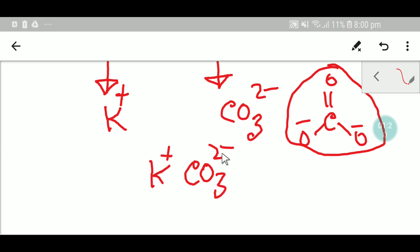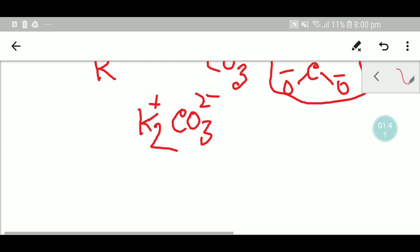So here you have two minus, but here you have one plus, and you need here two plus. So to take two plus, you have to add two as a subscript of potassium. So two potassium means two plus, and one carbonate means two minus. This two plus will cancel out this two minus, and you are getting the formula of potassium carbonate.